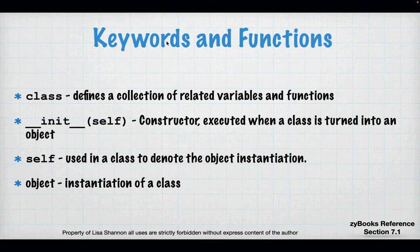There are a few keywords and functions. First, we have a new keyword: class, which defines a collection of related variables and functions. We have something called a constructor with the very specific name __init__(self). This is the thing that takes it from being a definition — a class is like a function, it doesn't exist until it's called. Self is used in the class to denote the object that you've instantiated. And an object is an instantiation of a class.